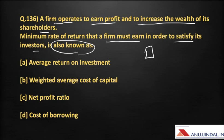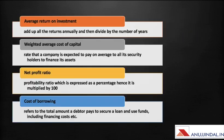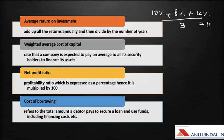In the next slide we will discuss these four terms and then it will be easier to answer the question. The first one is average return on investment. Suppose for three years the annual rates of return are 10%, 8%, and 12% respectively. The average rate of return is calculated by adding these rates and dividing by the number of years, which comes out to be 10%.